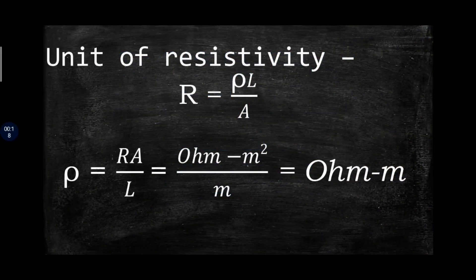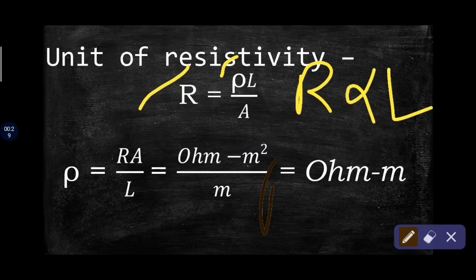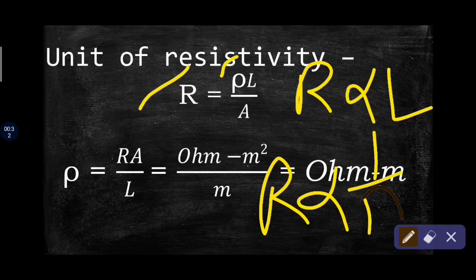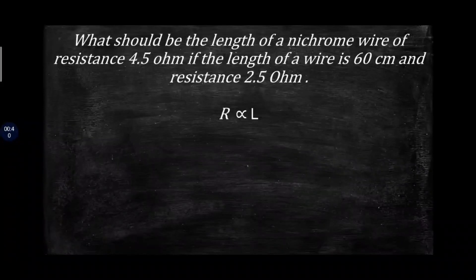This is the formula for the relation between resistance and resistivity. We know that resistance is directly proportional to length, and resistance is inversely proportional to the cross-sectional area of a material. Also, the unit of resistivity is ohm meter.